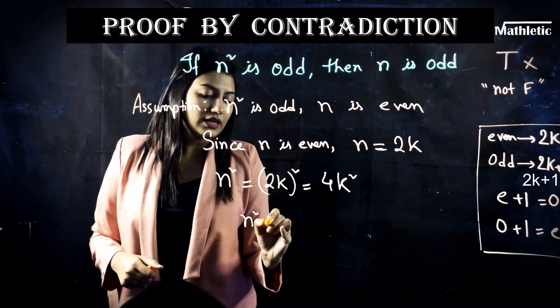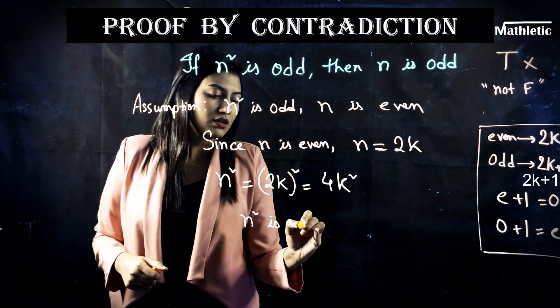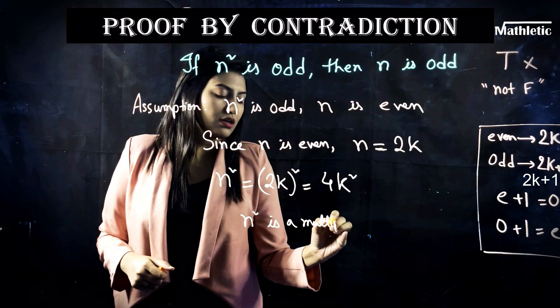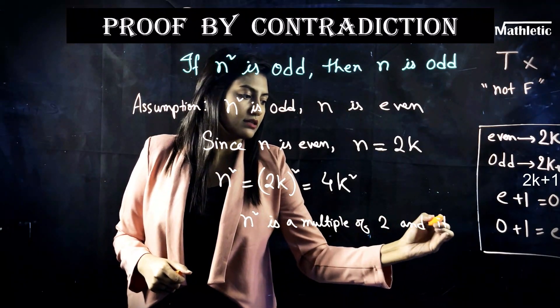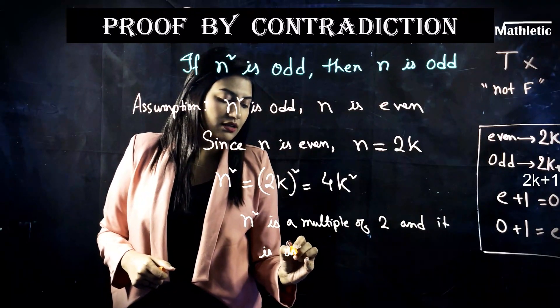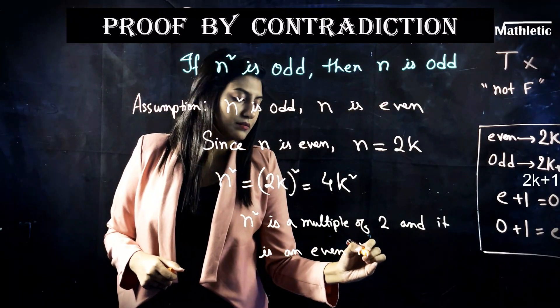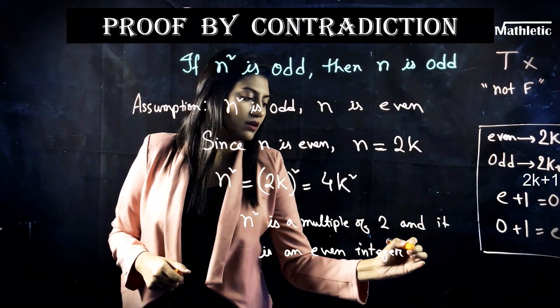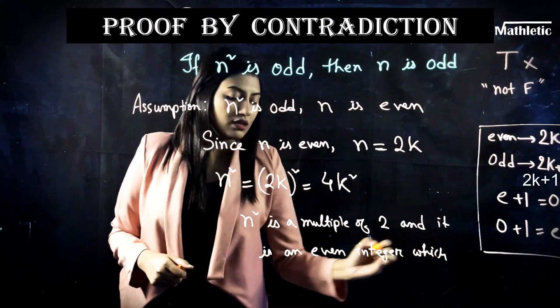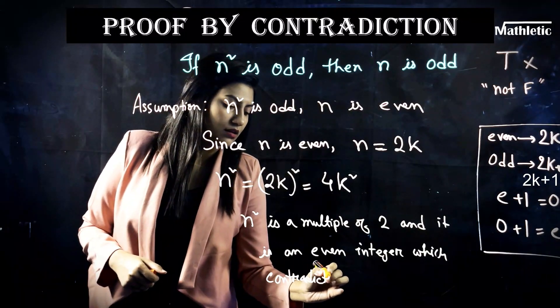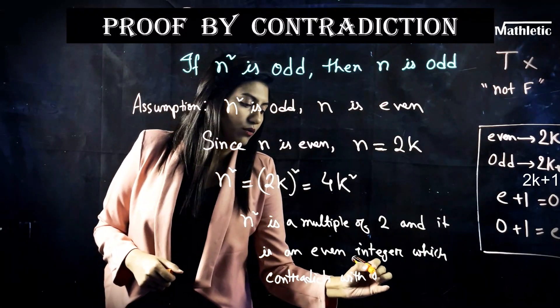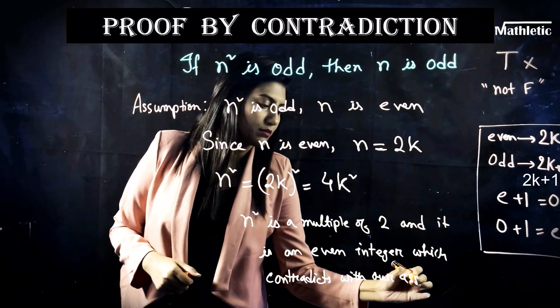So actually, we got that n² is a multiple of 2 and it is an even integer which contradicts with our assumption.